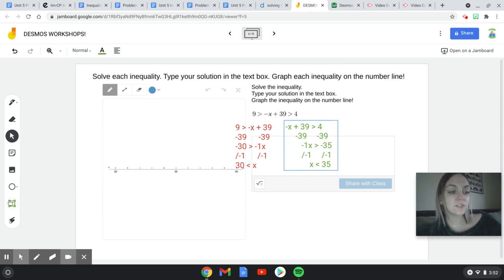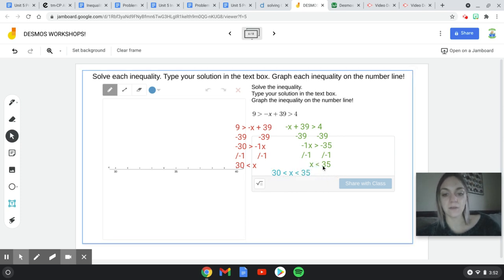So now I've got my two pieces of this inequality together. I'm going to go ahead and put them together. So 30 is less than x, which is exactly what I have in red. And then x is less than 35, which is what I have in green over here.